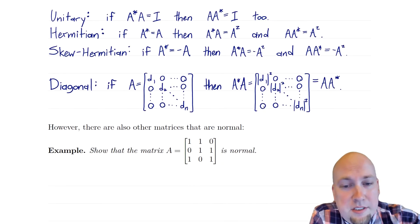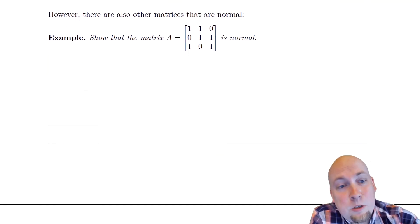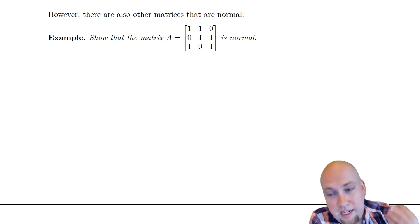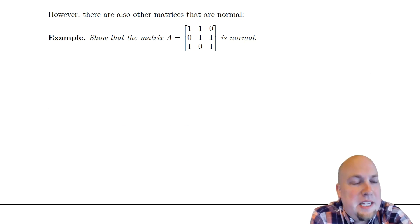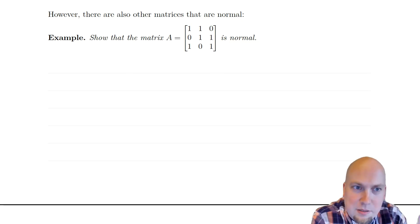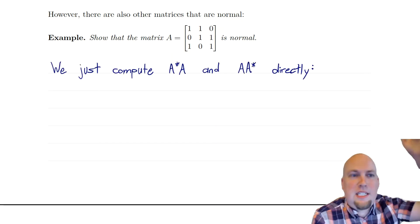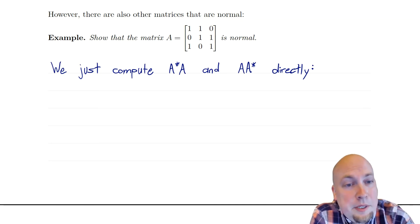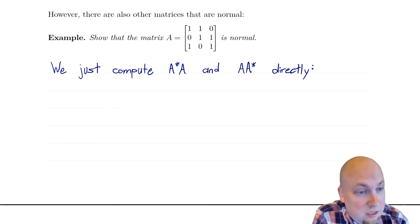So diagonal matrices are another example of normal matrices, but there are lots of matrices out there that are normal that are none of those previous types. There are normal matrices that are not diagonal, not unitary, not Hermitian, and not skew-Hermitian. Let's just go through a quick example to see how that can happen. Real numbers are fine too, since real numbers are complex numbers. Here's a real normal matrix that does not fall into any of those classes.